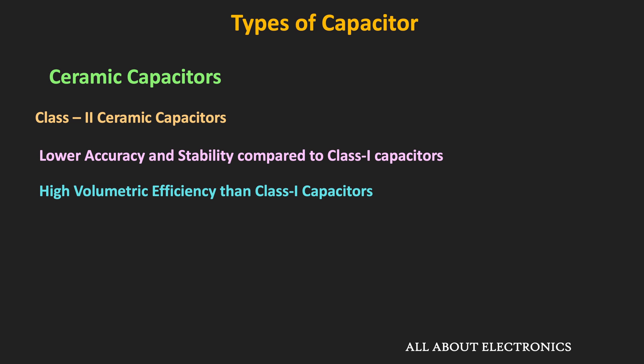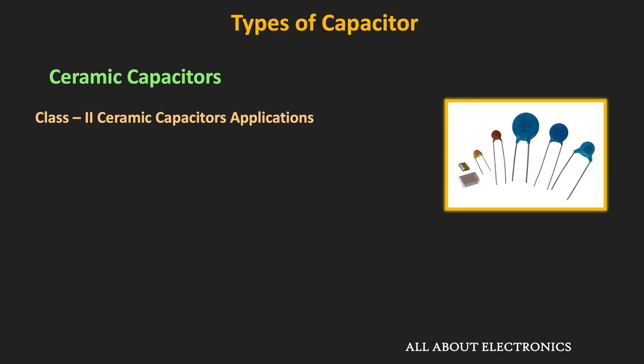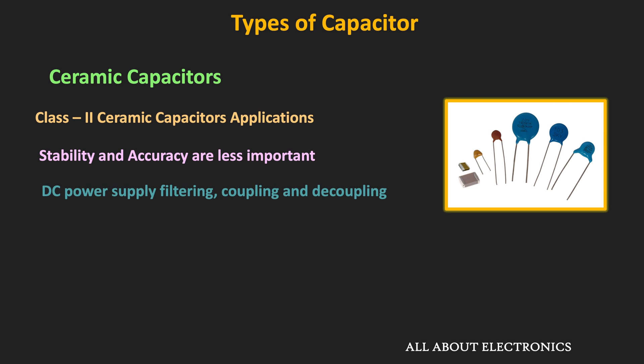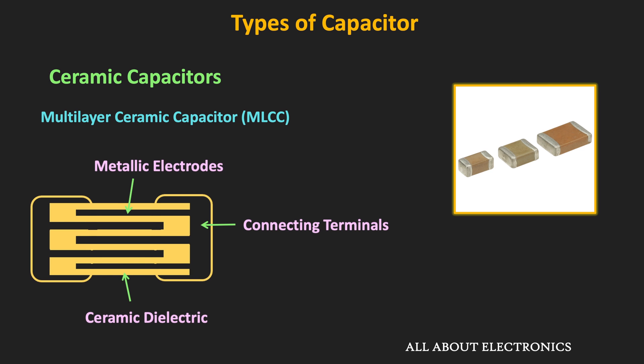As temperature changes, there is a nonlinear change in capacitance for class 2 capacitors, and the capacitance also changes with biasing voltage. Therefore, class 2 capacitors are used in applications where stability and accuracy are less important, typically in DC power supply filtering and coupling/decoupling in various circuits. Nowadays, the surface mount multilayer ceramic capacitor (MLCC) is very popular, with billions produced every year. MLCC is made up of alternating layers of metal electrode and ceramic dielectric, resulting in many small capacitors connected in parallel.